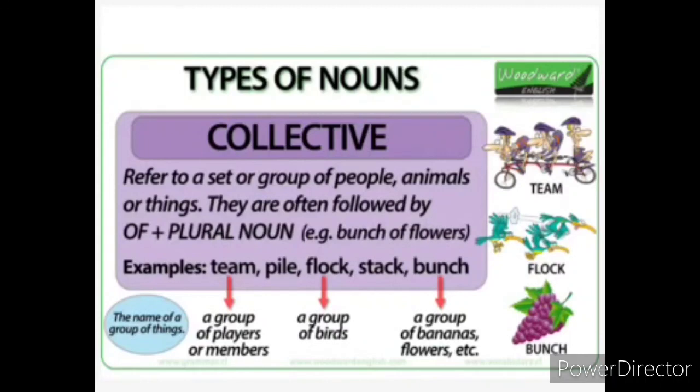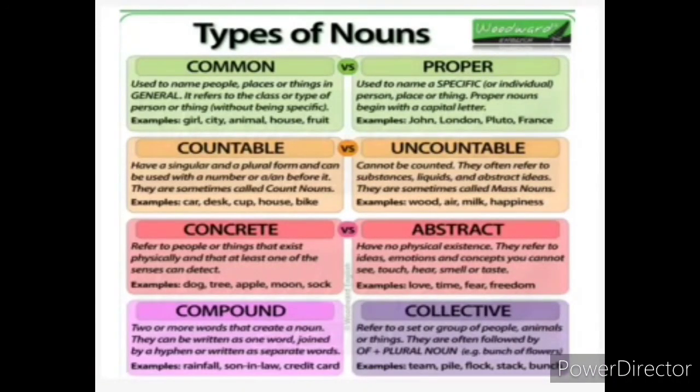Now, types of noun: common noun, proper noun, countable, uncountable, concrete, abstract, compound, and collective. I hope everybody understood the topic of types of nouns. Thank you.